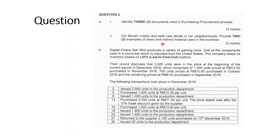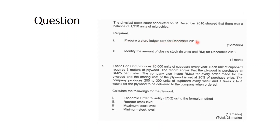Direct and indirect material is based on traceability. For part B, as we can see, this is the LIFO method — but as I explained before, LIFO has already been abolished, so we change it to FIFO, which is the first-in, first-out method. The requirement is to prepare a store ledger card for December 2016, and number 2 is to identify the amount of closing stock in RM for December 2016. For part C, the requirements are EOQ calculated using the formula method, then reorder level, maximum, and minimum stock levels — this is the topic of stock levels.